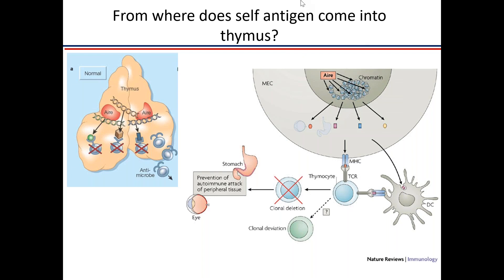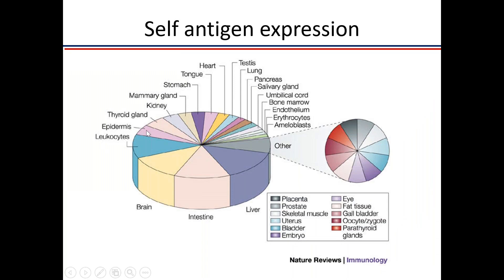APS1 classically presents with type 1 diabetes, hypoparathyroidism, Addison's disease, and chronic mucocutaneous candidiasis. This is the classical triad of APS1. In vitro experiments have shown that medullary thymic epithelial cells can express antigens from all these organs, which is why we generally don't develop autoimmunity.